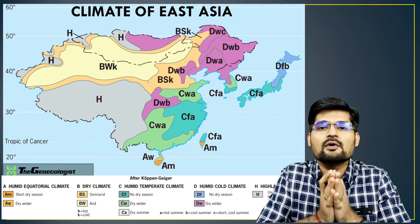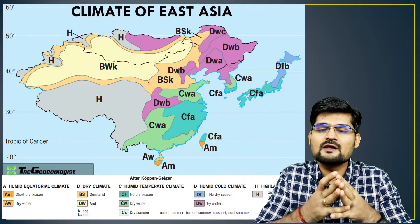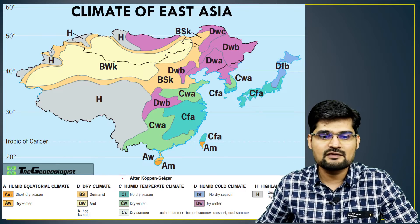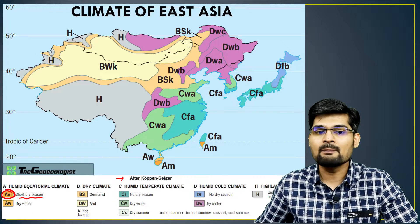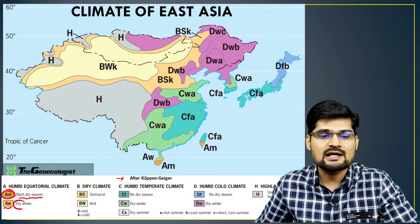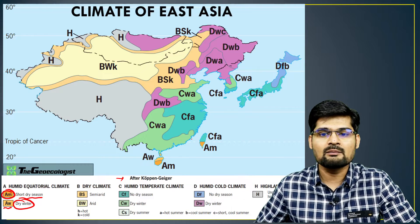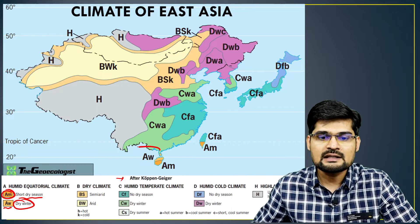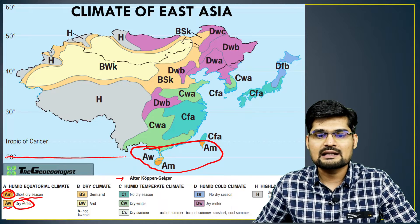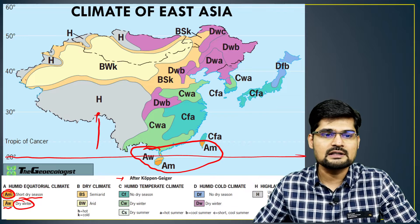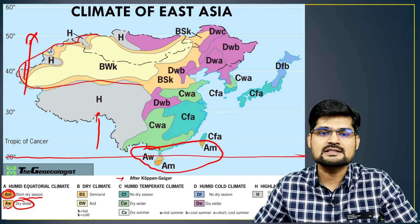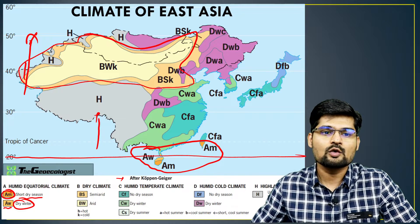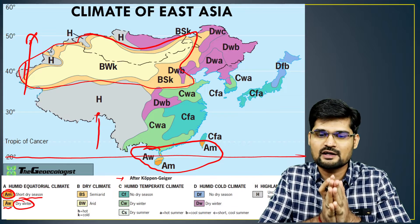One important aspect of geographically understanding the realm is its climate. Looking at the Koppen climatic division, the southern tip — around 20 degrees latitude — has AM (short dry season) and AW (dry winters) climate types. As you move toward 30, 40, and 50 degrees into the temperate belt, a huge desertic condition exists in the western and northwestern part of this realm.